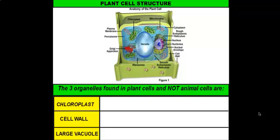When we discussed cell structure earlier this year, we compared them to animal cells. And what we found and learned is that plant cells have three organelles that animal cells do not. Here on the left, they're listed as chloroplasts, cell wall, and large vacuole.